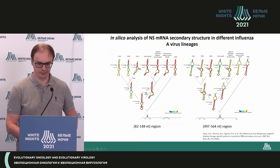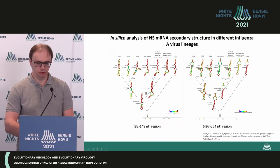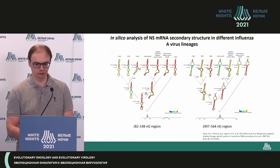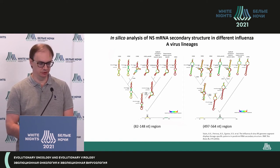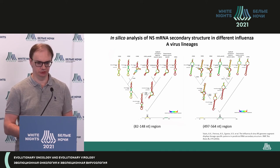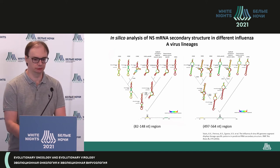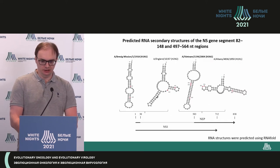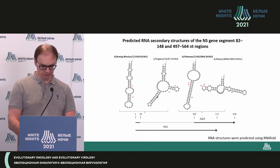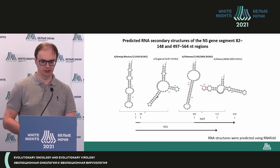So the key question is whether these structural changes have any functional value. To answer this question, we did experiments. We selected four structures presented in this slide. First is a structure from virus H1N1, a typical stem loop structure. Another structure was taken from a virus from Great Britain, used as a reference sequence. Then two structures — a stem loop and a non-stem loop — were taken from viruses of the second region. We specifically took sequences which we could see in natural viruses, not introducing mutations absent from natural settings.